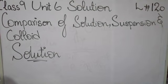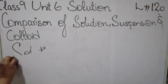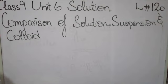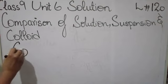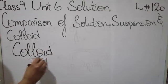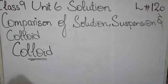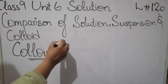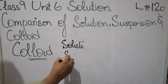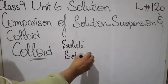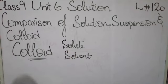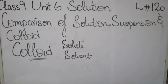So that was about solutions. Now we will talk about colloid. Colloid is a new word for you. These are also solutions, and a solution depends on two types of components — solute and solvent. In a colloid, the particles of the solute are larger than those present in a true solution, but they are not so large as to be seen by the naked eye.